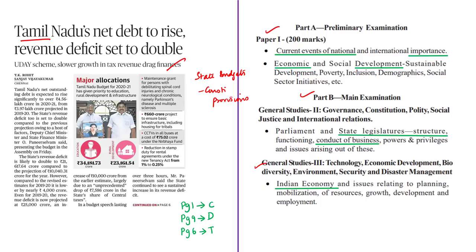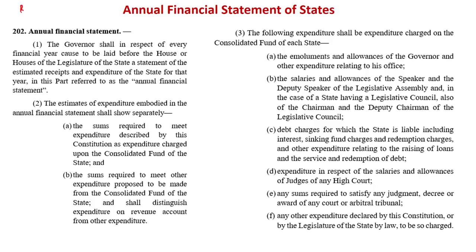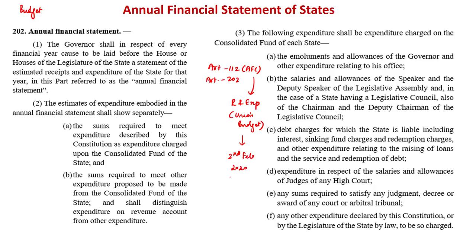This news article is about the release of the budget in the state of Tamil Nadu. Note that the term 'budget' is nowhere mentioned in the Indian Constitution. Article 112 and Article 202 deal with budgets. Article 112 mentions the Annual Financial Statement — the statement of estimated receipts and expenditure of the Government of India. For details on the union budget, refer to our February 2nd, 2020 Hindu news analysis.